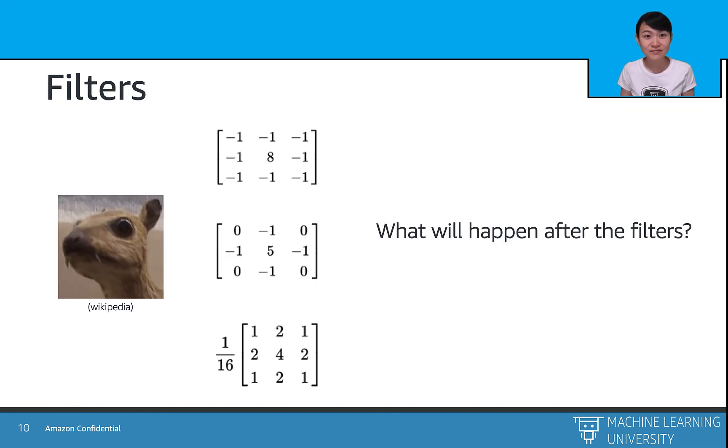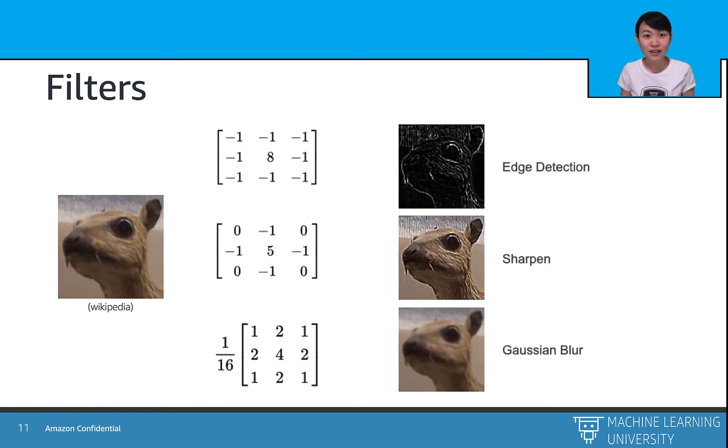So here are three sample filters, represented by three matrices. If the input image comes in, what will happen after each of the filters?